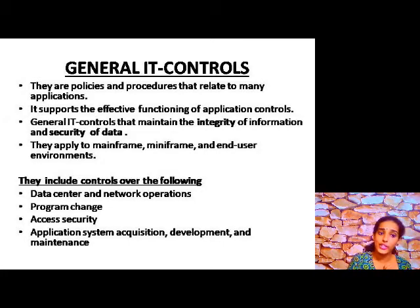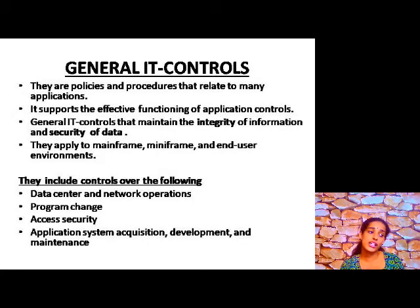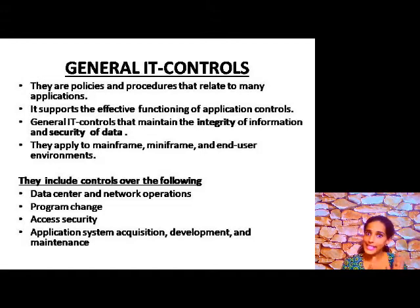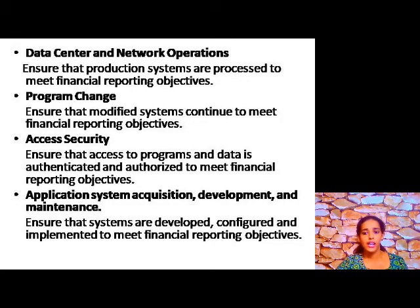General controls cover four main areas where processing happens: first, your data center and network operations; second, program change; third, access security; and fourth, application system acquisition, development, and maintenance. In chronological order: data center and network operations, then application system acquisition, then development and maintenance, then program change if any modification is required, and finally access security.